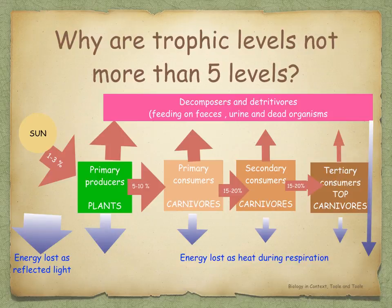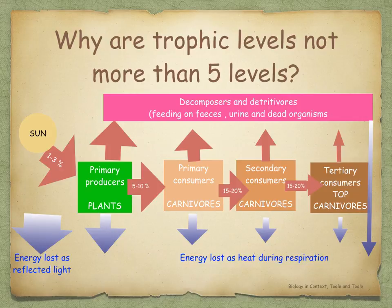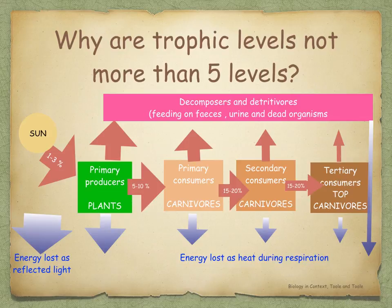Why are trophic levels not more than five levels long? Carnivores are slightly more efficient, transferring about 20% of the energy available from their prey into their own bodies. It's the relative inefficiency of energy transfer between different trophic levels that explains why most food chains have only about four to five trophic levels — because insufficient energy is available to support a breeding population at higher levels. The biomass of organisms and the total amount of energy stored are also less at each successive level.